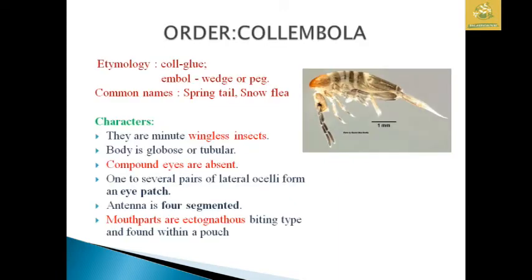Next we are going to see about the order Collembola. The etymology: 'Collum' means glue and 'Embola' means a wedge or peg. They have wedge or peg-shaped structures in their body. Their common names are Springtail as well as Snowflea.